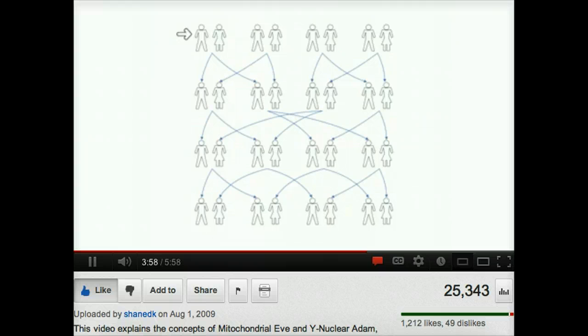Like mitochondrial Eve, he is not the first man, not the only man in his generation, not the only male progenitor, not the only male whose line led to the current generation, and not the ancestor of all humans who ever lived. Not only that, he's not even married to Eve. They had no children together, didn't even have to know each other, and may not even have lived in the same place.